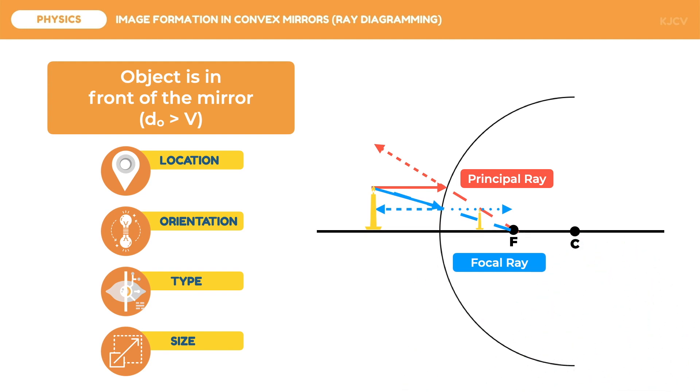Let us now identify the qualitative characteristics of this image. For the image location, we are going to describe it relative to the points on the diagram. Since the image is nearest to F, we are going to use it as a reference point. However, we cannot say that the image is just greater than F because all areas before the mirror are greater than F. With this, we will also use the vertex as another reference point. The image is formed in between the vertex and focus. This gives us the image location: d sub i is less than V but greater than F.